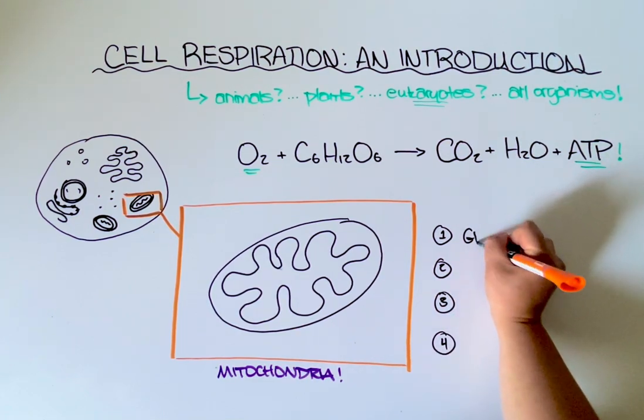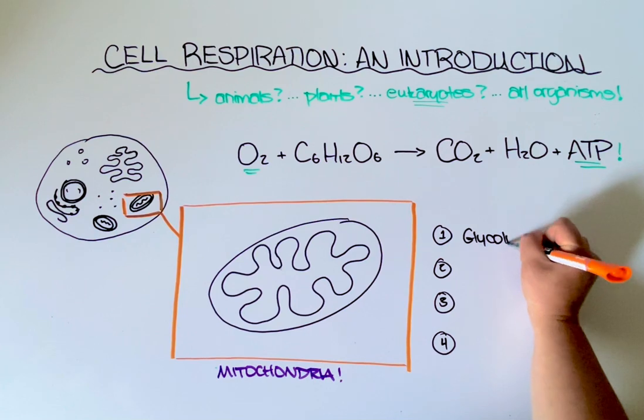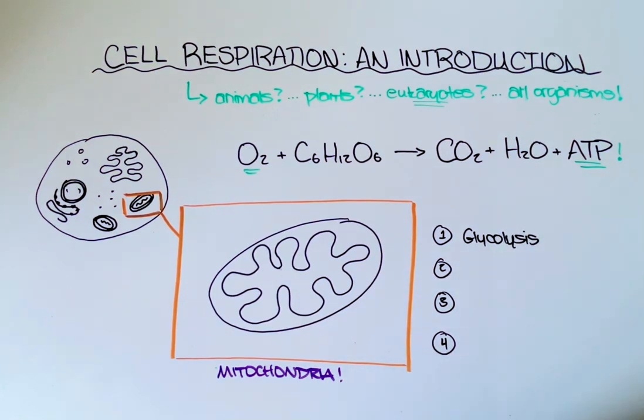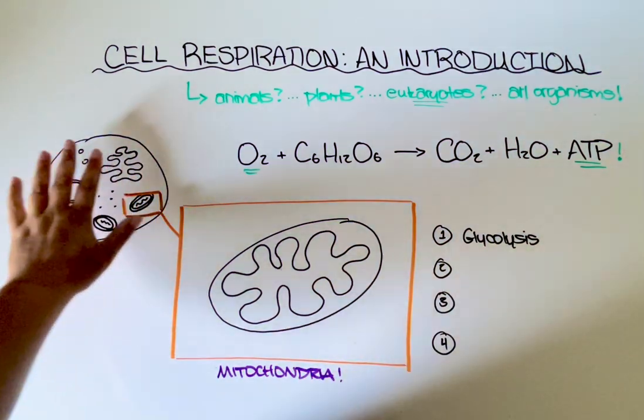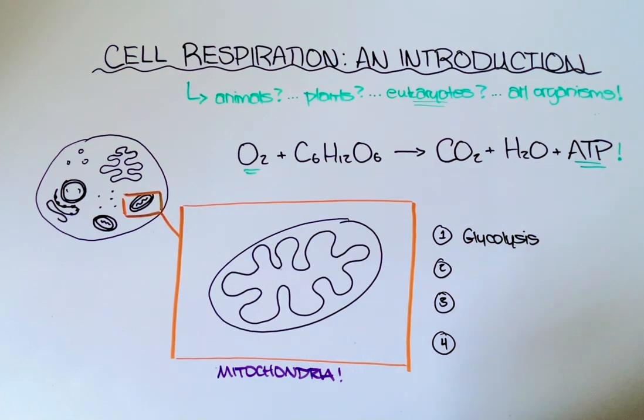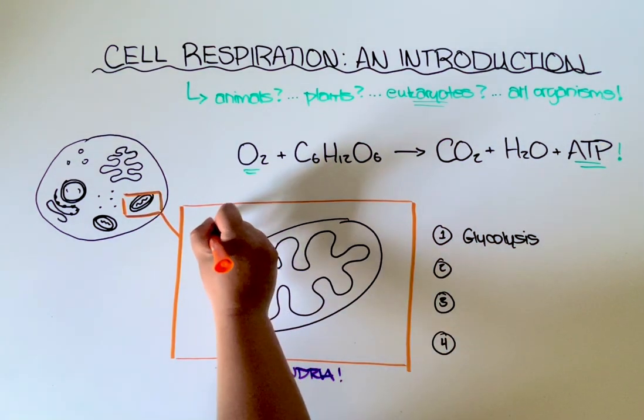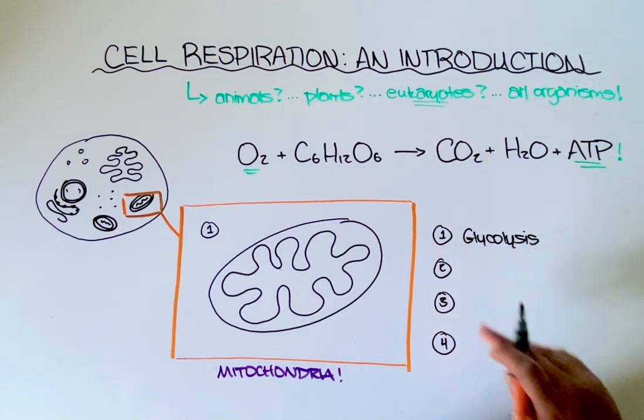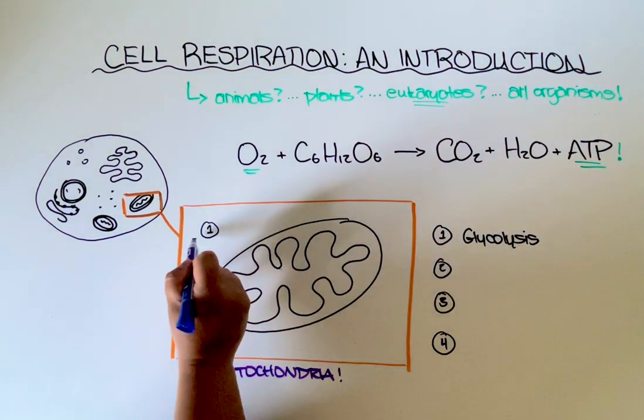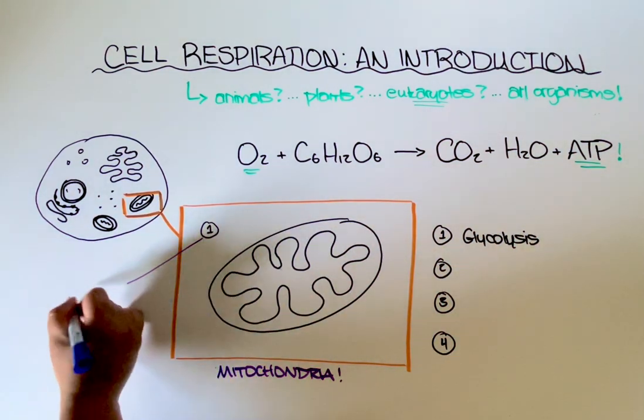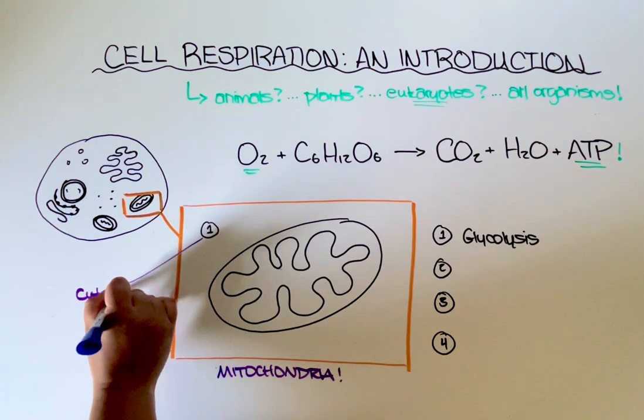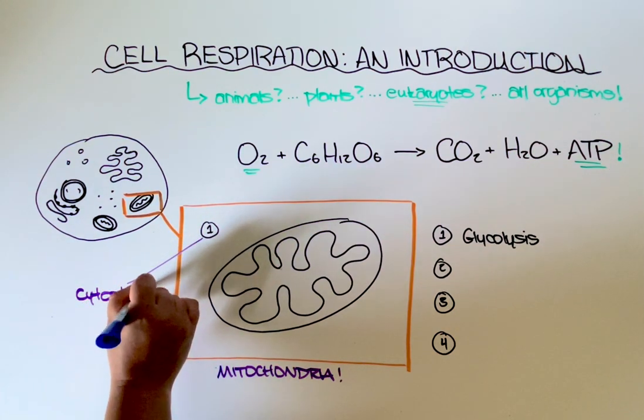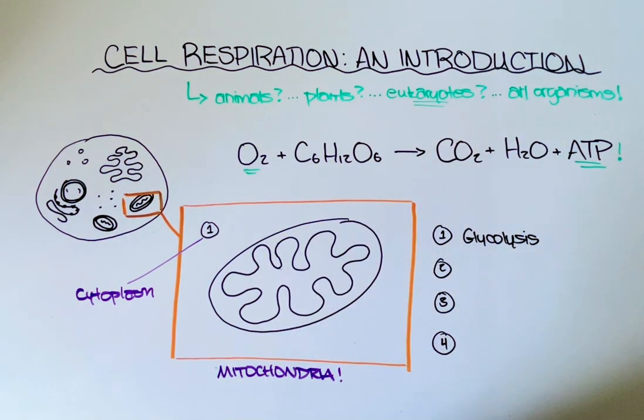The first step being glycolysis. So glycolysis doesn't even happen in the mitochondria. Glycolysis happens out here in the cytoplasm of the cell. And it is the only step out of the four that does not require oxygen. So actually all organisms do glycolysis in some way. And again that process happens in the cytoplasm of the cell. Which is why all organisms, even prokaryotes, can do that.